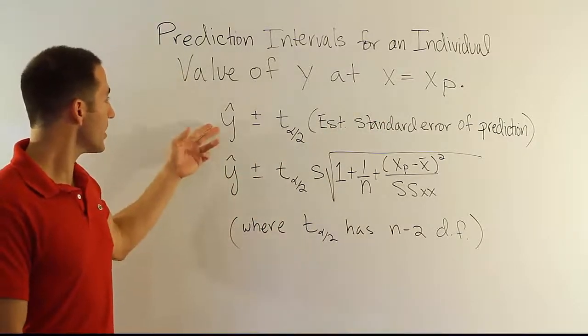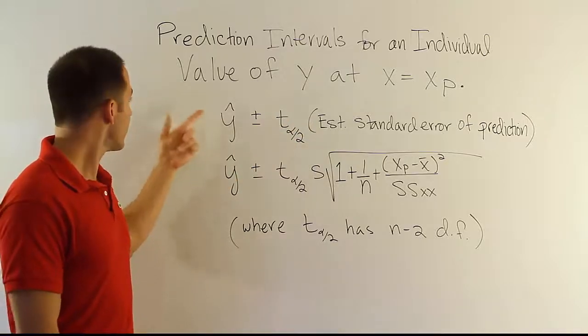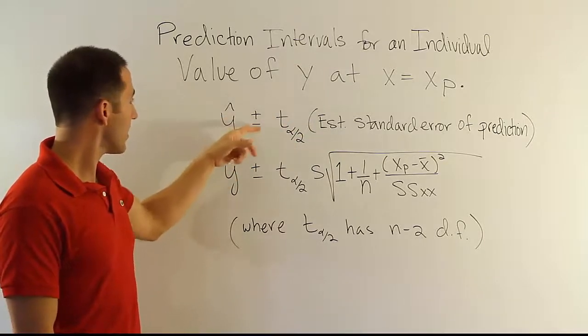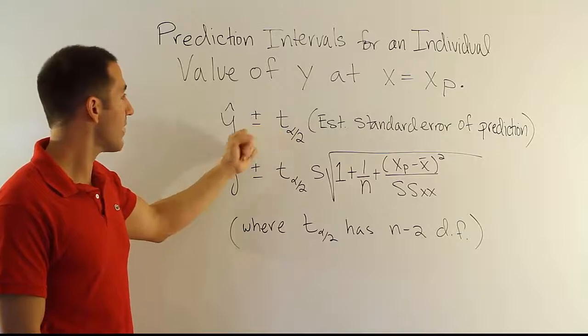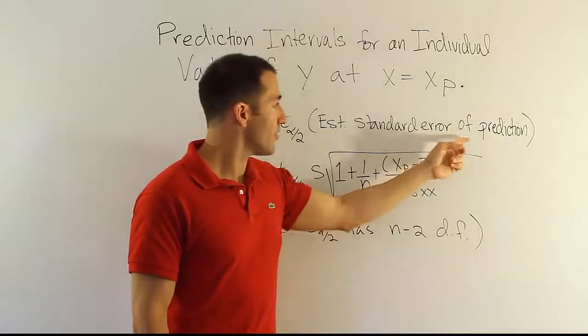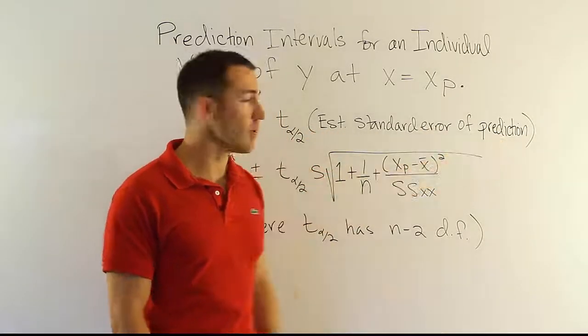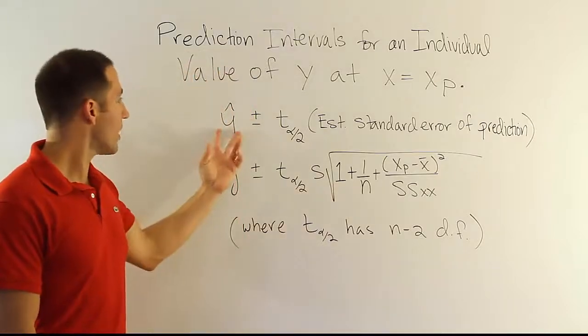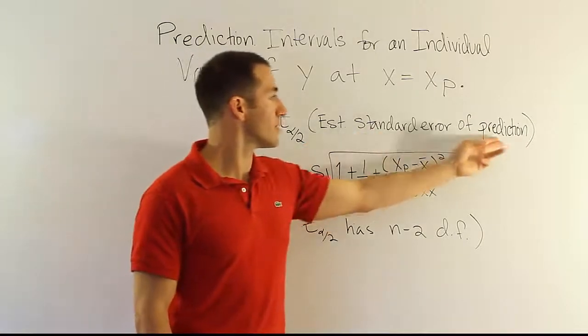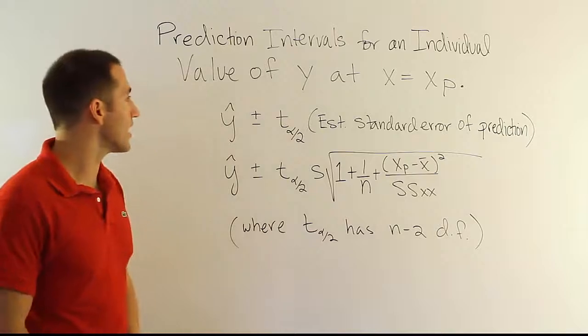The formula has a similar structure to the other one. It's y hat plus or minus the table value, the t-table value, and then an estimate of the standard error of prediction. Before we had the standard error of y hat, now we have the standard error of prediction.